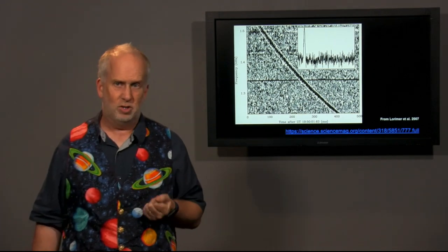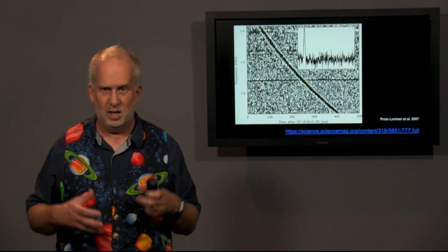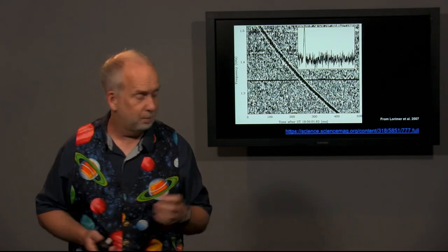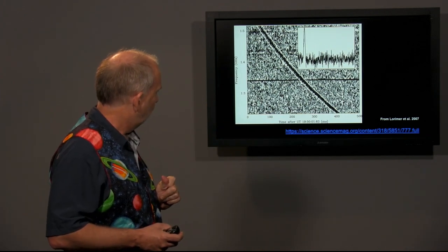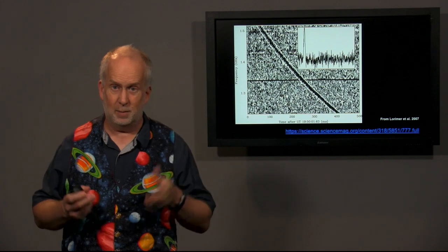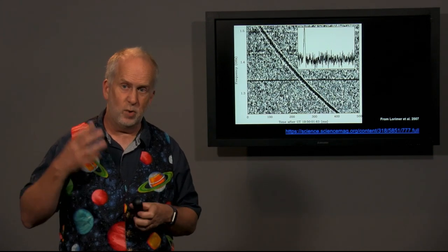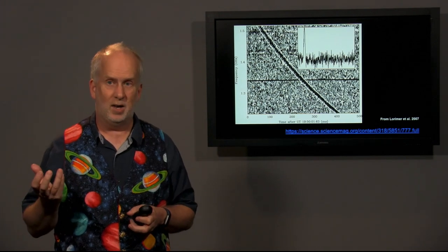Now most terrestrial interference, whether it be microwave ovens, satellites, mobile phones, any of the myriad of things that can jam our radio signals, you wouldn't get this trend with frequency. It would all happen at the same time. This is what you expect if the sudden radio burst was happening from very far away, outside our own galaxy, way outside our own galaxy.